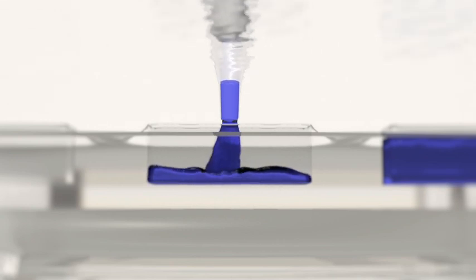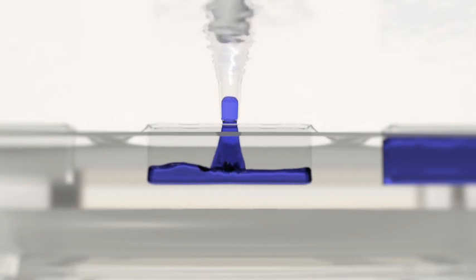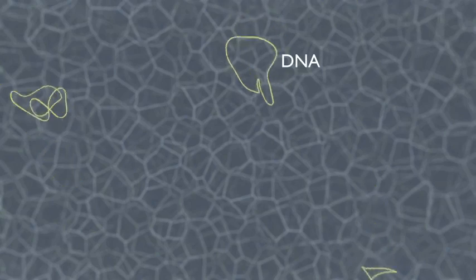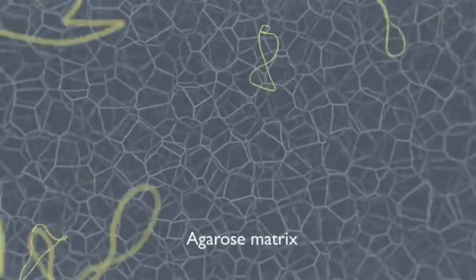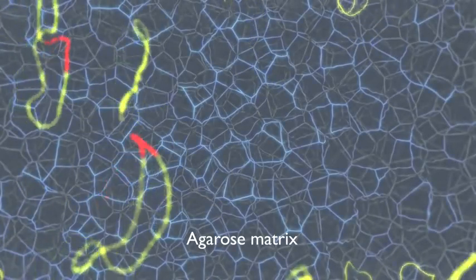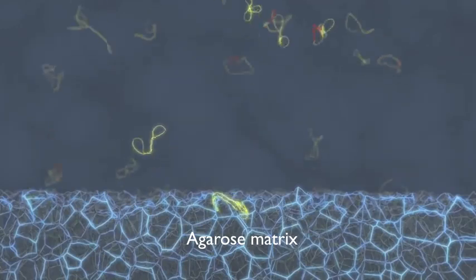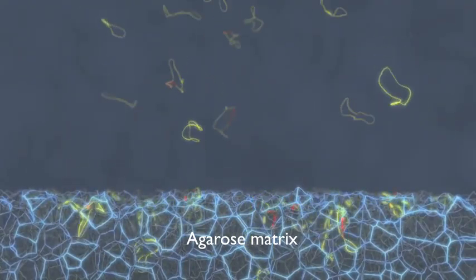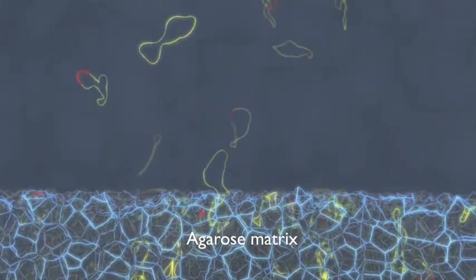The dyes help researchers track the progress of the DNA fragments as they migrate through the gel. When electrical current is applied to the gel, the DNA fragments, which have a negative charge, migrate through the gel from the negative electrode toward the positive.